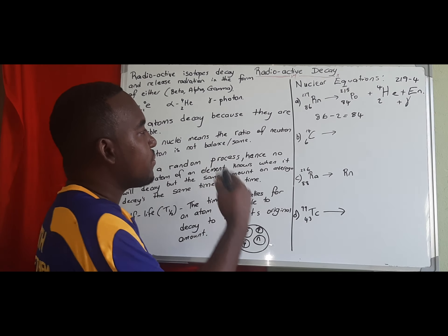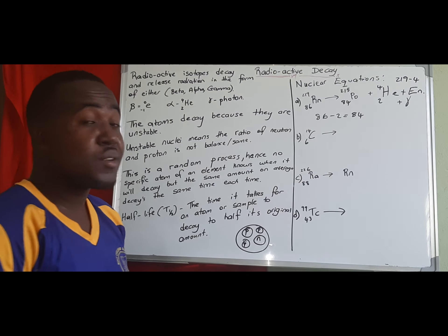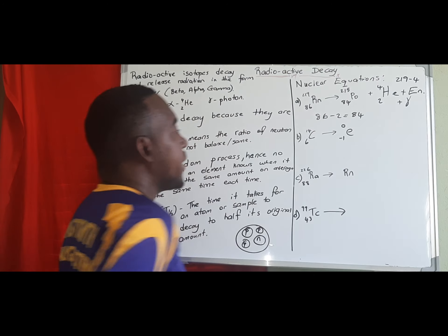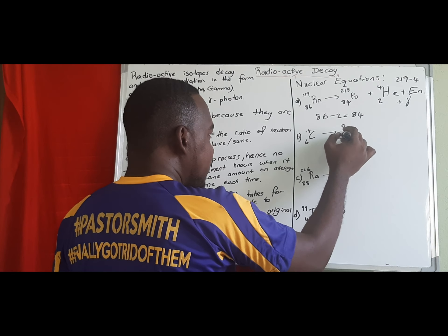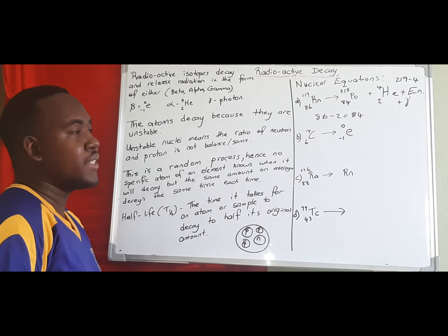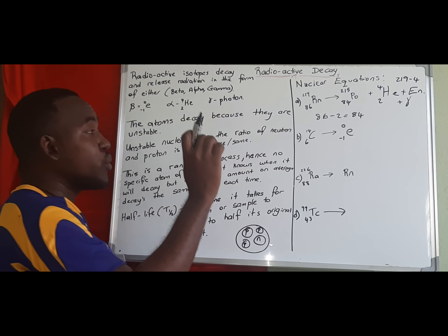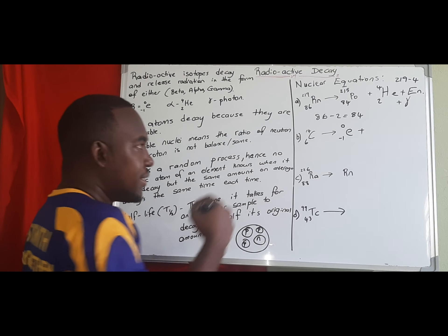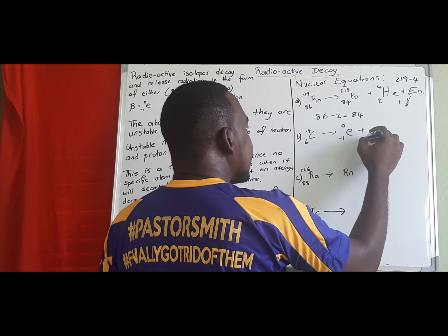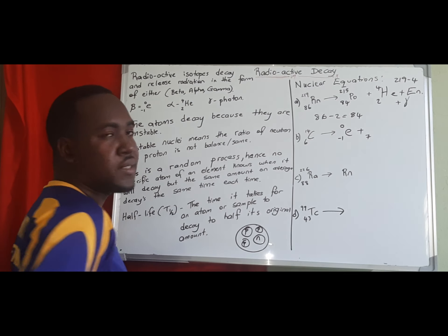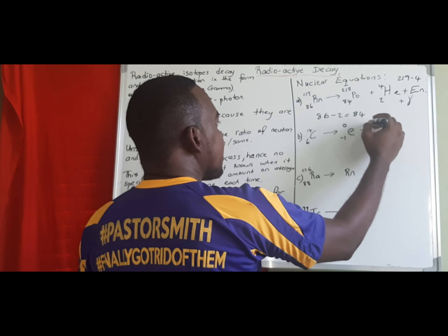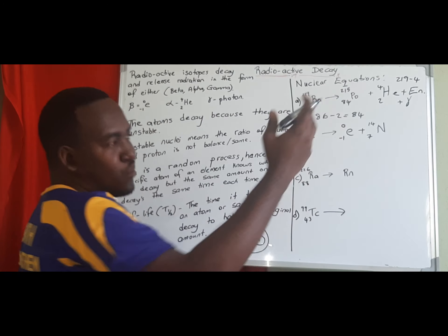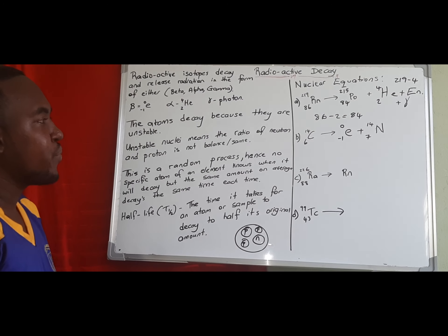Now let's look at carbon, which has atomic number 6 and mass number 14. Since it's less than 30, we know it will emit beta radiation. For beta, note the charge is negative one — we use negative one, not just one. We need negative one plus a number to equal six, so the number must be seven. Seven minus one gives us six, and the mass number remains the same.